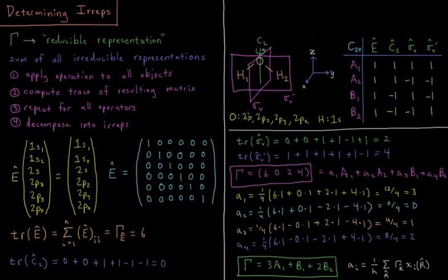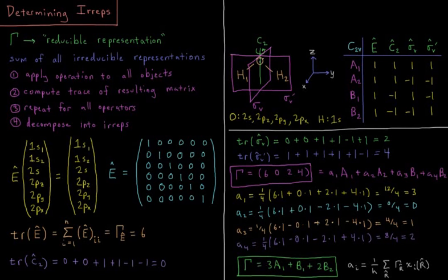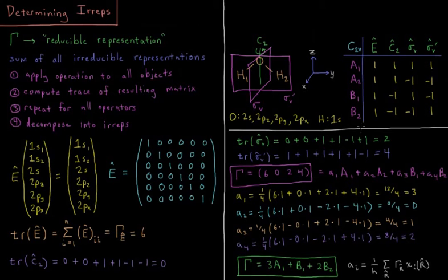For sigma V: 1s1 becomes 1s2 and 1s2 becomes 1s1, so those contribute 0. The 2s stays the same (on the plane), so that's 1. The 2pz stays the same, that's 1. The 2py gets reflected through the plane and becomes the negative of itself, minus 1. And 2px is in the plane so it stays the same, plus 1. So 0+0+1+1-1+1 = 2.